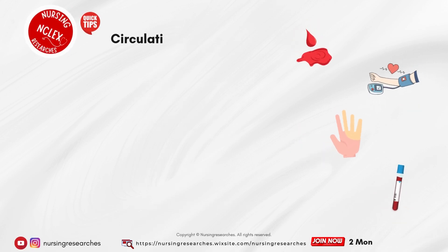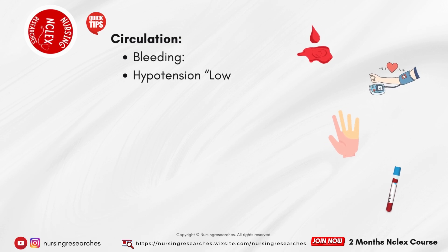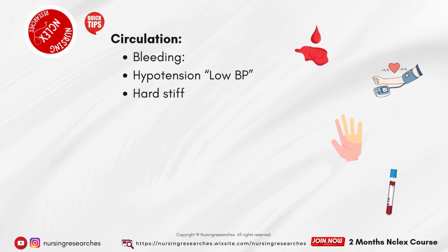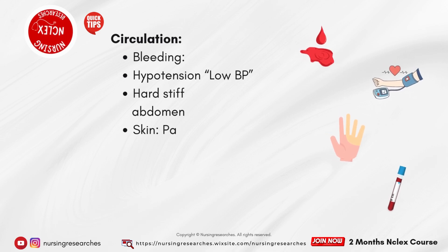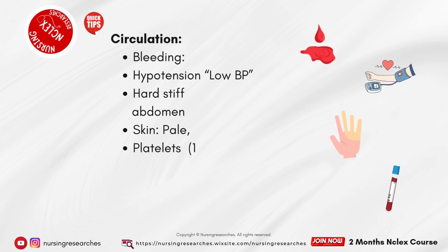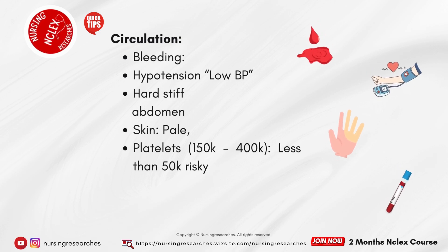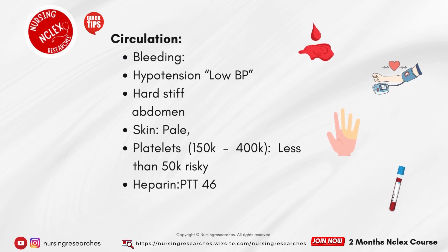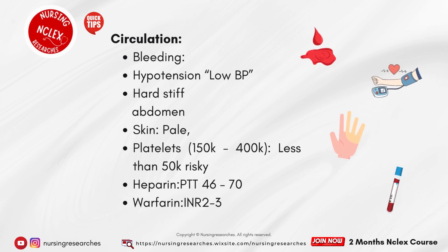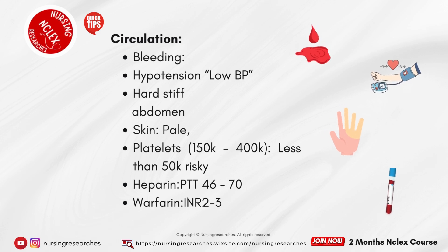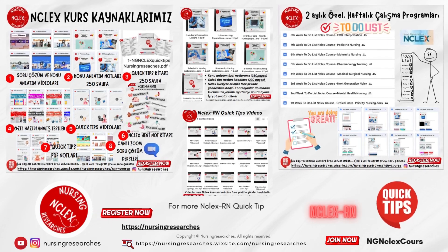Circulation: bleeding, hypotension — low BP. Hard, stiff abdomen. Skin pale. Platelets: 150K–400K normal; less than 50K is risky. Heparin: PTT 46–70. Warfarin: INR 2–3.